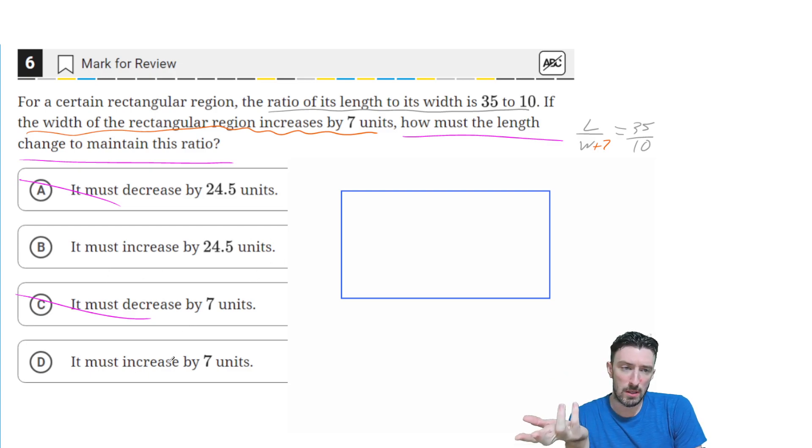Now how is it going to increase, is it going to increase by 24.5 or by 7? Well if I just put 7, would that keep the same ratio? I don't think so. That would kind of change it.